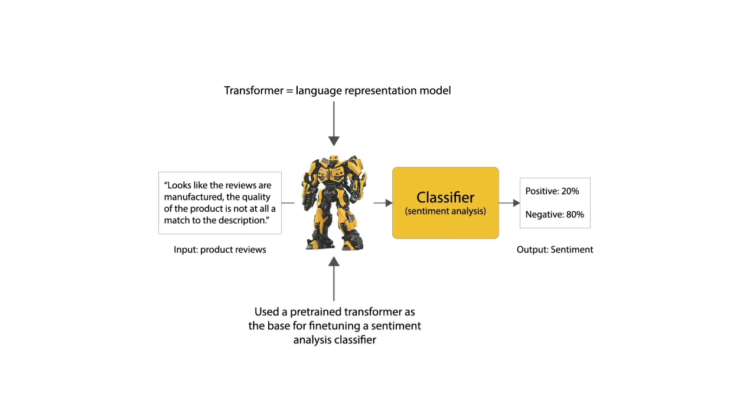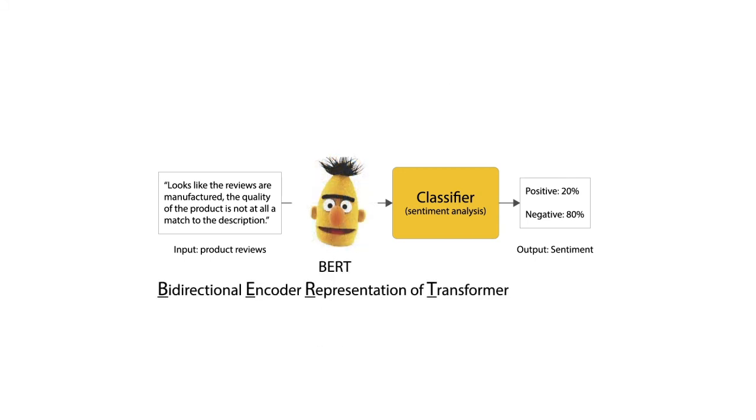Language model pre-training has been quite effective for improving many natural language processing tasks. The bi-directional encoder representation of transformer framework, or BERT, is a new language representation model from Google. BERT is a pre-trained language model and is relied upon for a variety of NLP tasks.